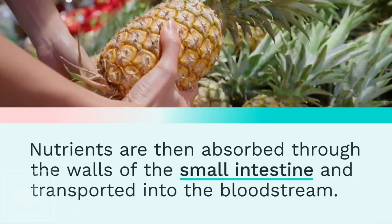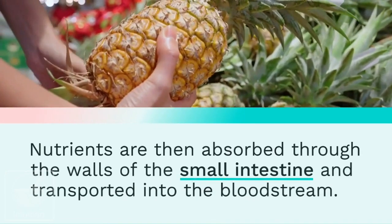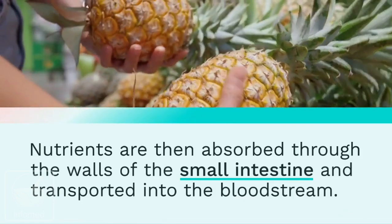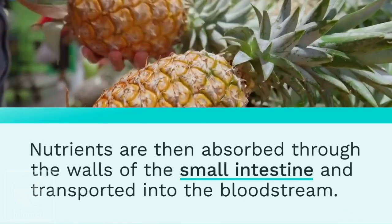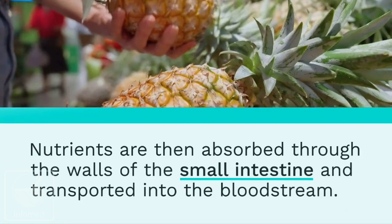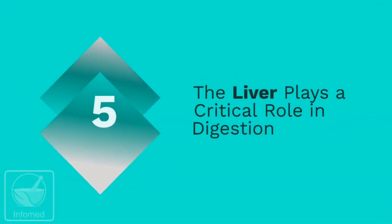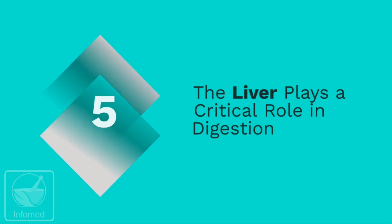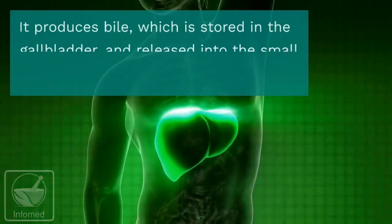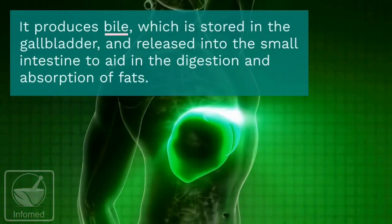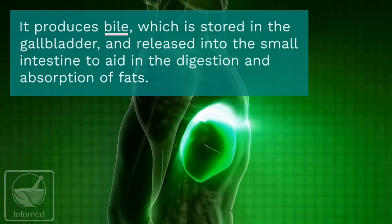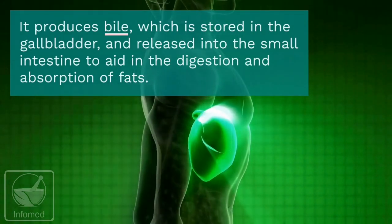Nutrients are then absorbed through the walls of the small intestine and transported into the bloodstream. Number five: the liver. The liver plays a critical role in digestion — it produces bile, which is stored in the gallbladder and released into the small intestine to aid the digestion and absorption of fats.